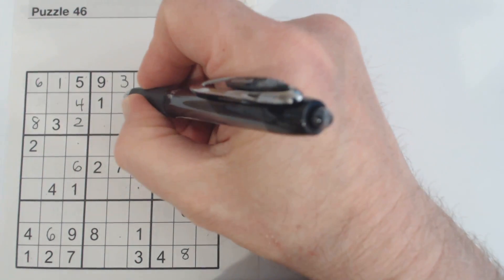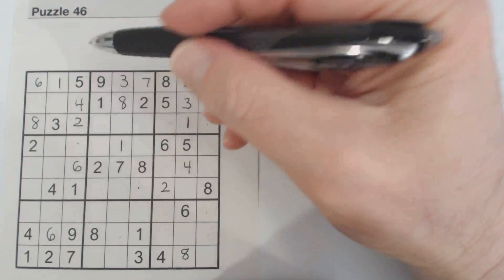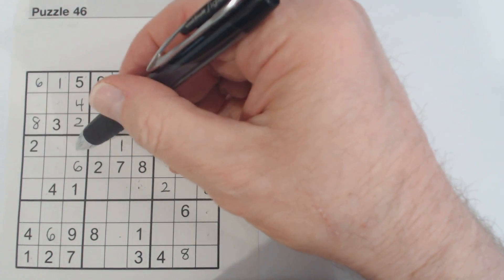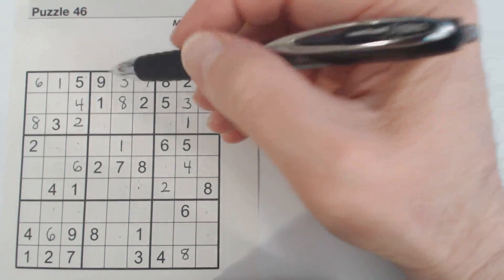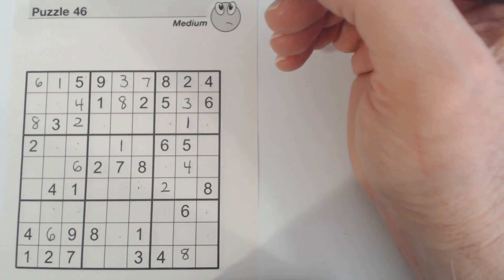And then this is an 8. We've got 8, 8, 8 in remaining spots. We can't solve any more 8s — we've got 7 and 9 there as twins still.